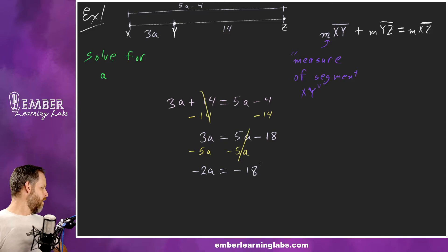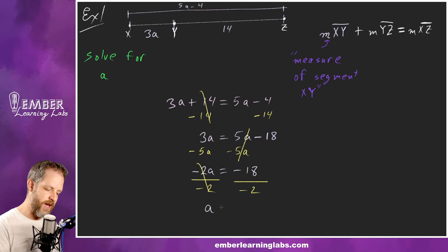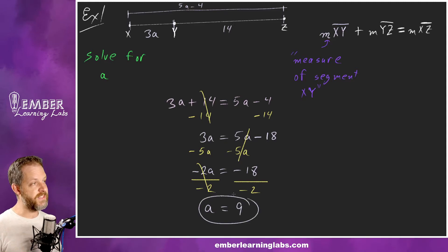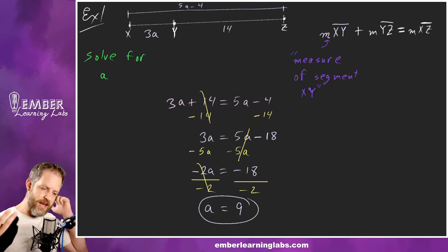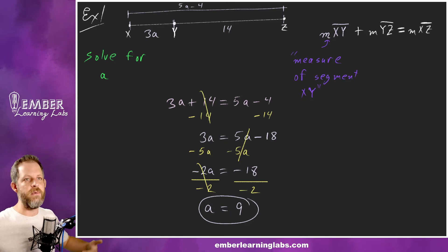Last but not least on this particular problem, we have this negative 2 multiplied onto the a. To get rid of it we do its inverse, so we're going to divide by negative 2. Divide on this side, divide on that side. Those cancel, leaving us with a equals positive 9. We're going to see this type of problem a lot, where we have some algebra stuck into a geometry picture and we've got to do the algebra. We have to understand the geometry.